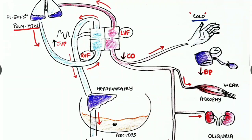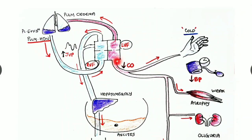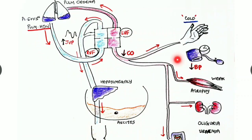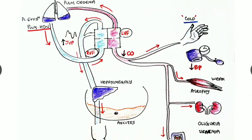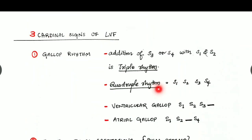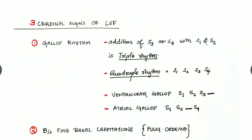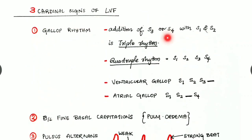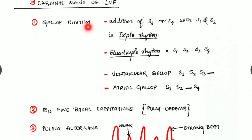In summary: right ventricular failure causes raised JVP, hepatomegaly, ascites, and bilateral pitting pedal edema. Left ventricular failure causes pulmonary edema, pulmonary hypertension, and other features of reduced cardiac output. Next, the three cardinal signs of left ventricular failure are gallop rhythm, bilateral fine basal crepitations, and pulsus alternans.